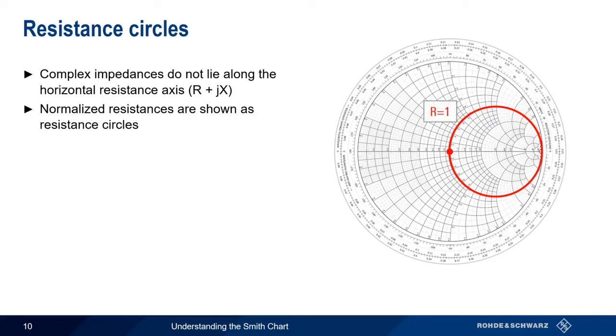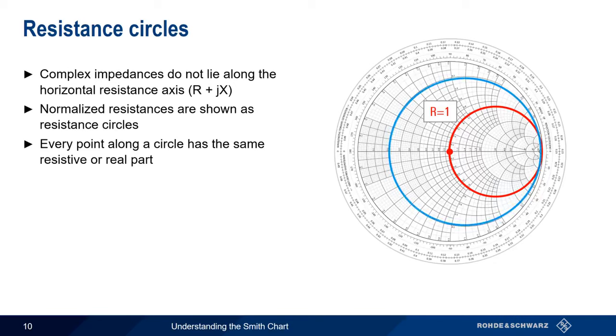In other words, every point along this circle has a normalized real or resistive part with magnitude 1. A similar circle, which passes through the resistance axis at 0.2, represents a normalized resistance of 0.2 at every point on that circle.